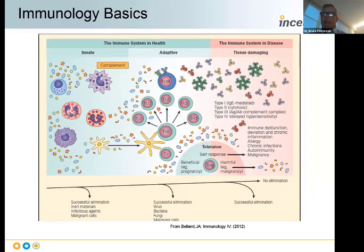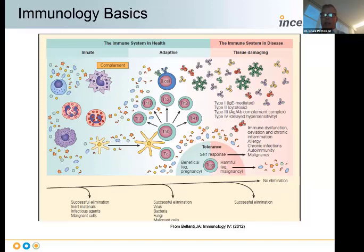There's innate immunity against organisms that the body has never seen before. Adaptive immunity kicks in with both humoral and cellular immunity, making antibodies and cell-mediated immunity. And then there's the tissue-damaging immunity that we saw in the early stages of COVID, where you had severe tissue damage necessitating hospitalization and respiratory care.